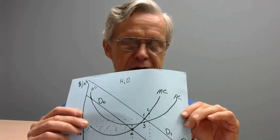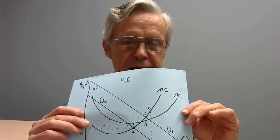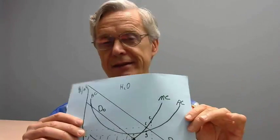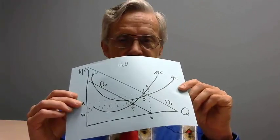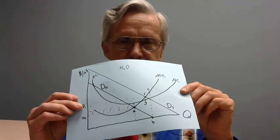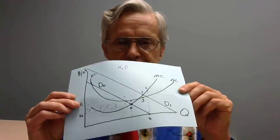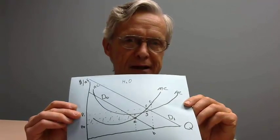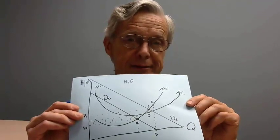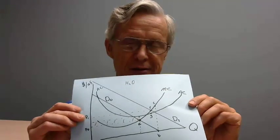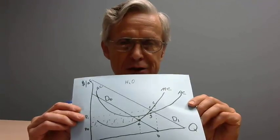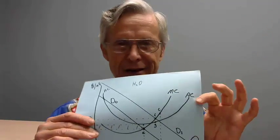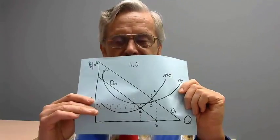Assume that the demand level is D0 and that either because of policy, laziness, politics, or they just don't meter water, they have to bill users — typically households, businesses — just through a flat fee. That means they have a certain revenue requirement and they divide that up among households. It's not usually evenly, because some users are bigger than others, so it might be according to meter size, but we'll assume they're all charged the same amount.